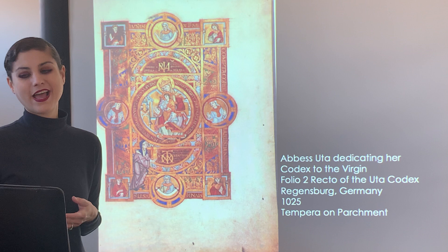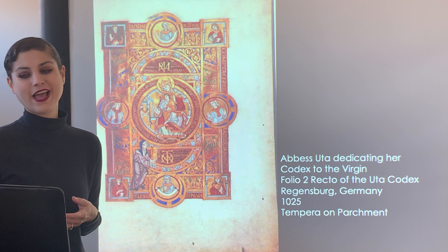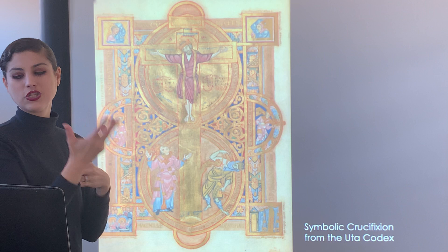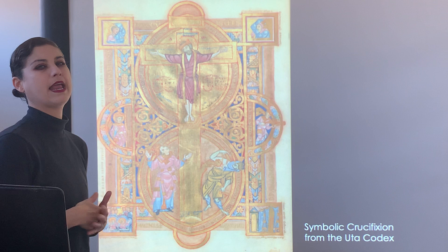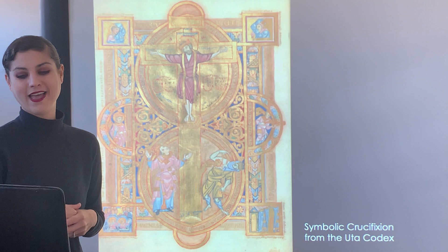The Uta Codex also has other examples like the crucifixion page, where you see geometric patterns and style, and the influence of gold from the Byzantine tradition. It's fascinating how the Ottonian manuscripts blend these Western and Eastern influences.